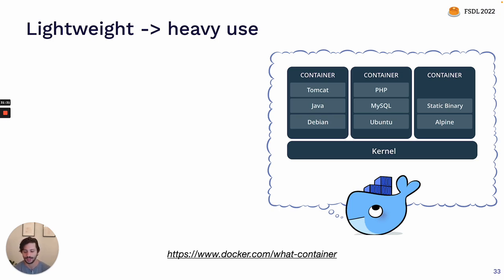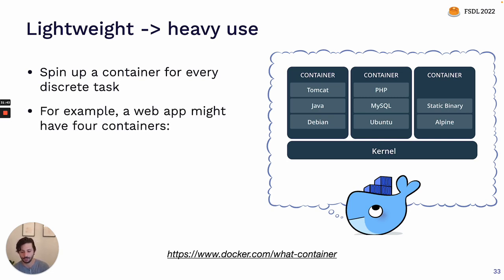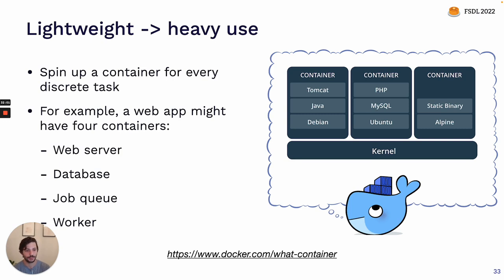Because Docker is much more lightweight than a typical virtual machine, it's used very differently. A common pattern is to spin up a new Docker container for every single discrete task that's part of your application. For example, if you're building a web application, rather than a single container you might have four — one for the web server, one for the database, one for a job queue, and one for your worker. Since each part of your application serves a different function and has different library dependencies, each goes into its own container. Those containers are run together as part of an orchestration system.